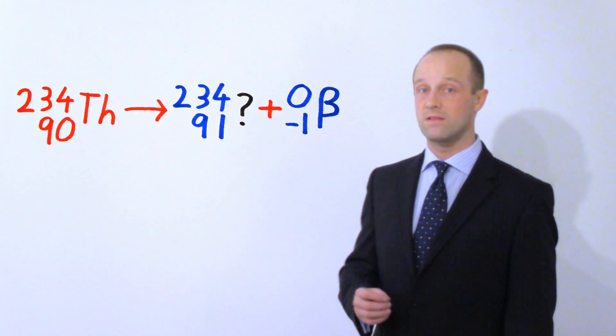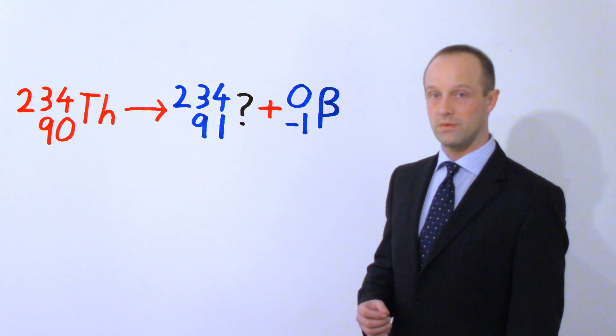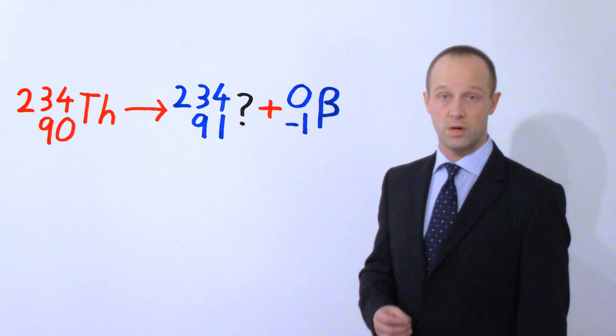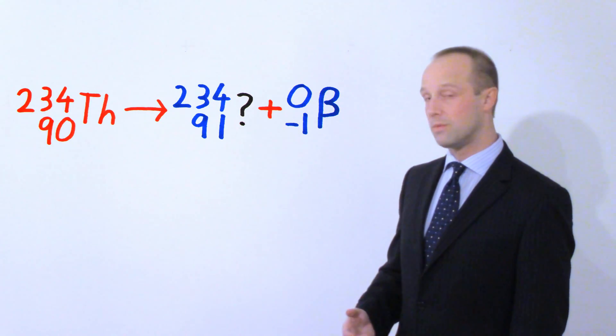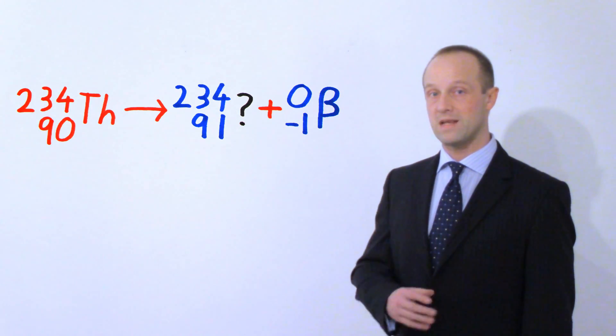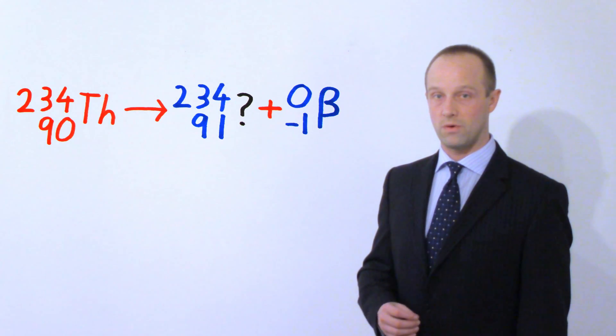The mass number hasn't actually changed at all here because a proton and a neutron have about the same mass. So we've produced the electron, we've got to produce a proton to conserve charge, so the proton number goes up by one and the mass number stays the same. Instead of having thorium 234 with a mass number of 234 and a proton number of 90, we get a new element with a proton number of 91, but the mass number remains 234.